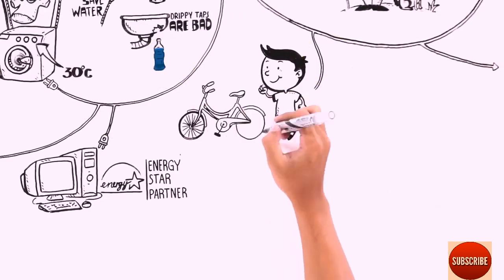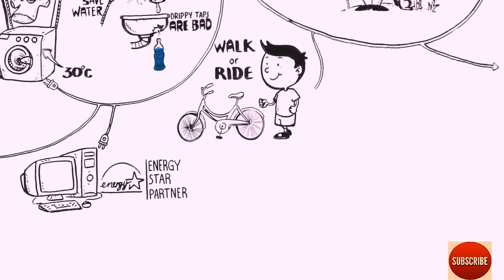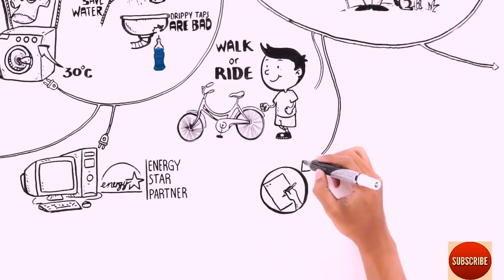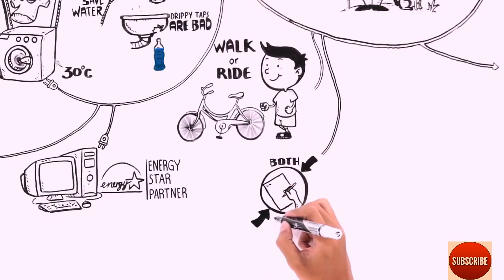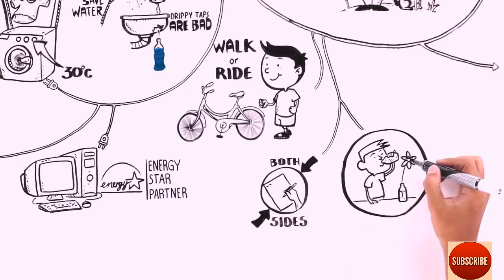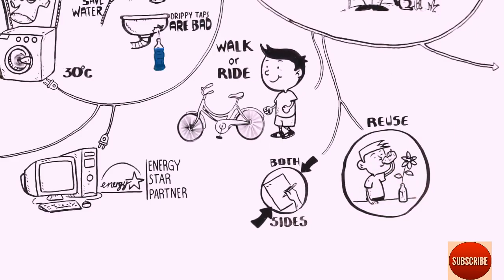And how about riding a bike instead of driving? Being energy smart means doing little things. Little things that are important, like using both sides of a piece of paper. And if you can reuse something, instead of throwing it away, please do.